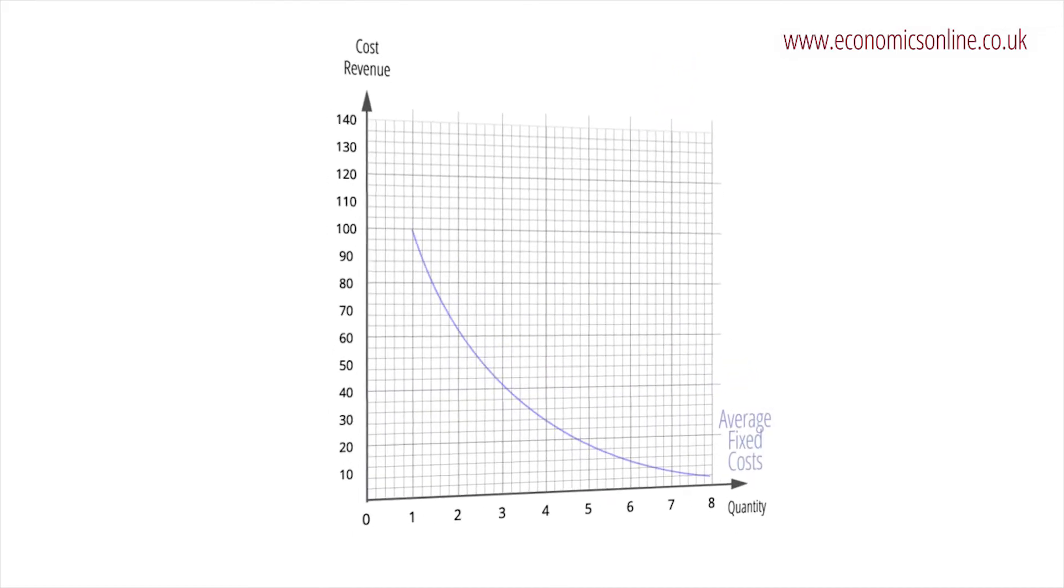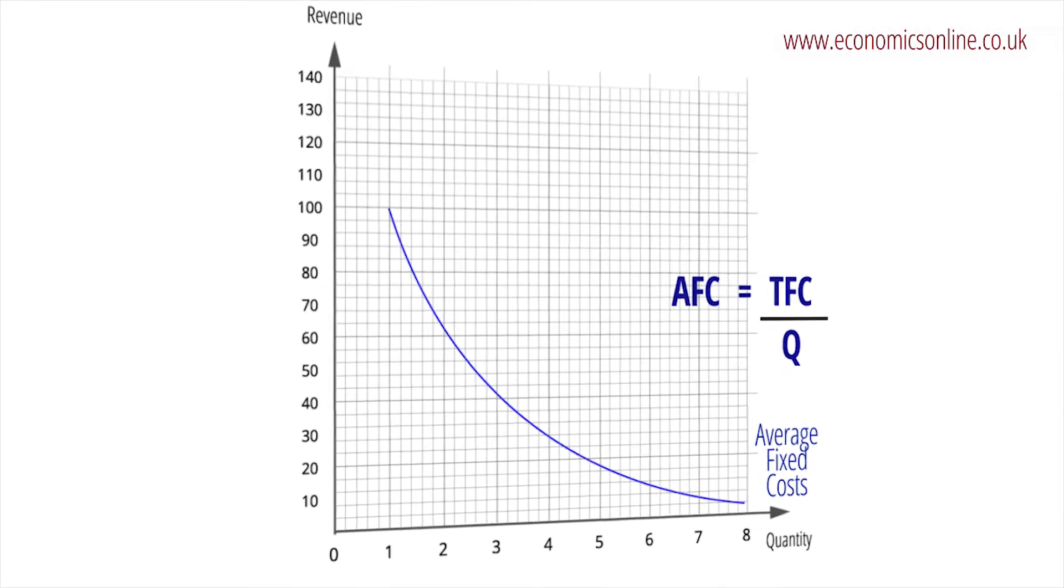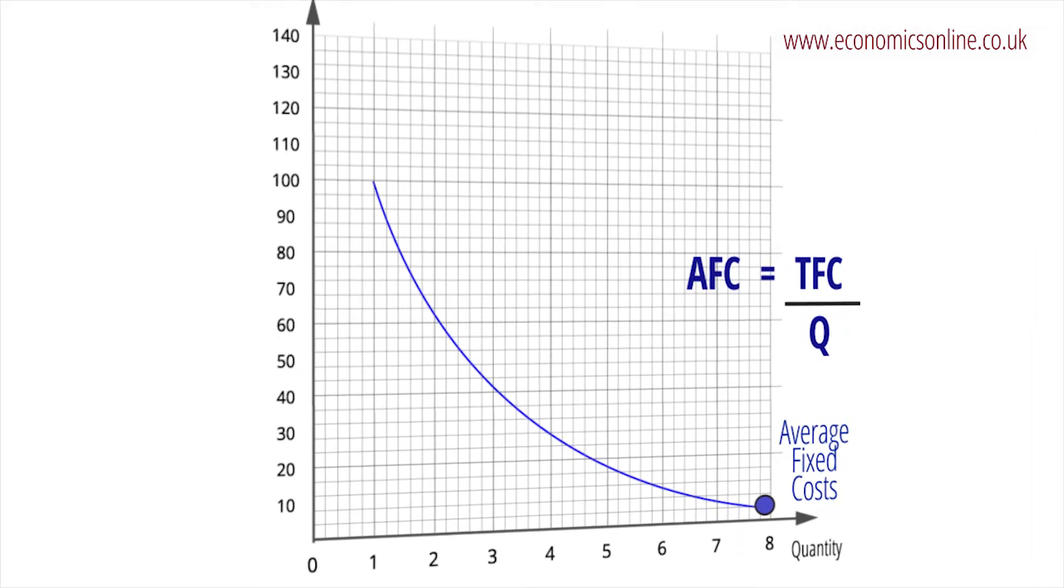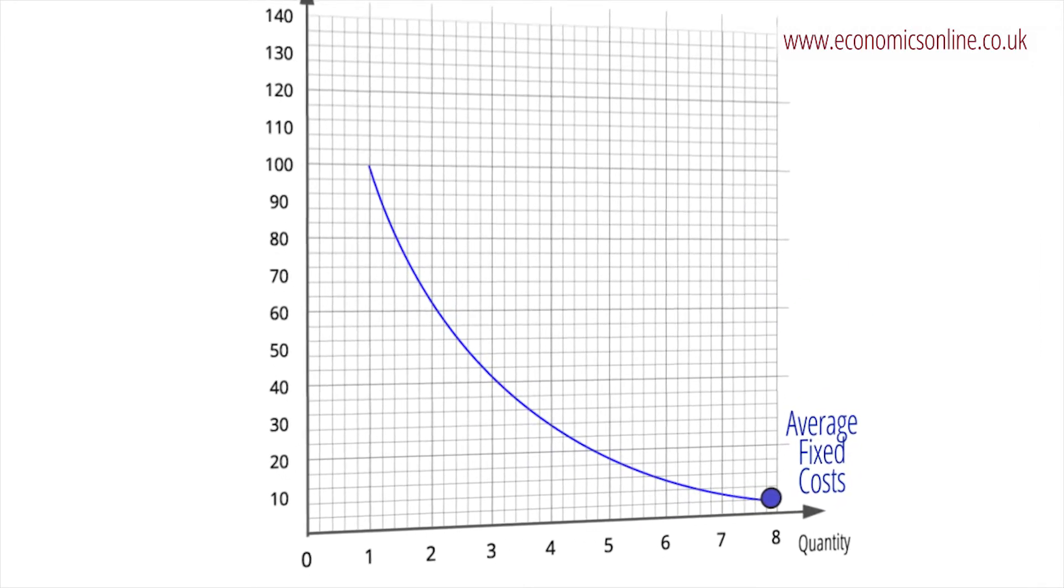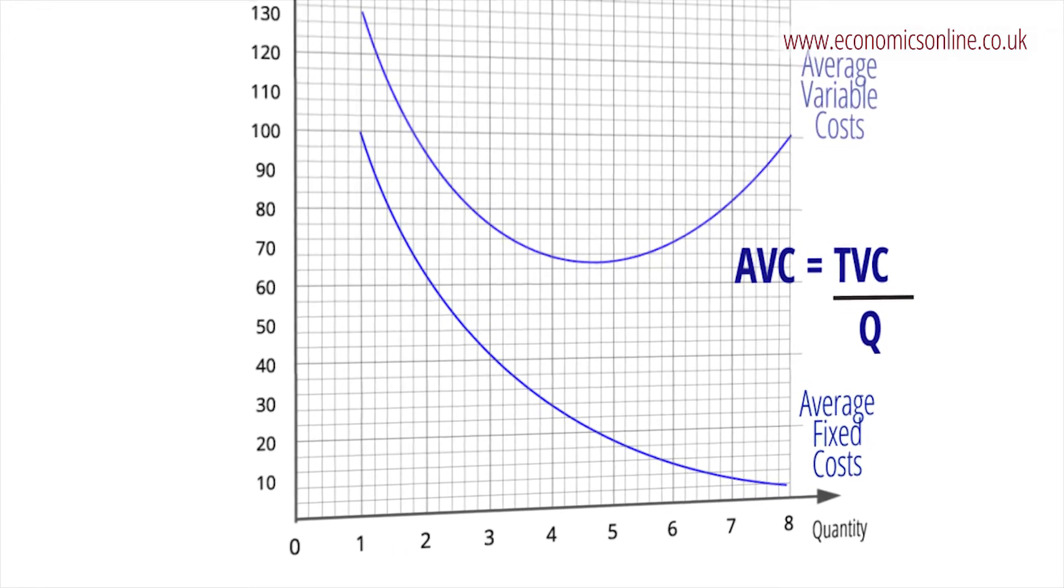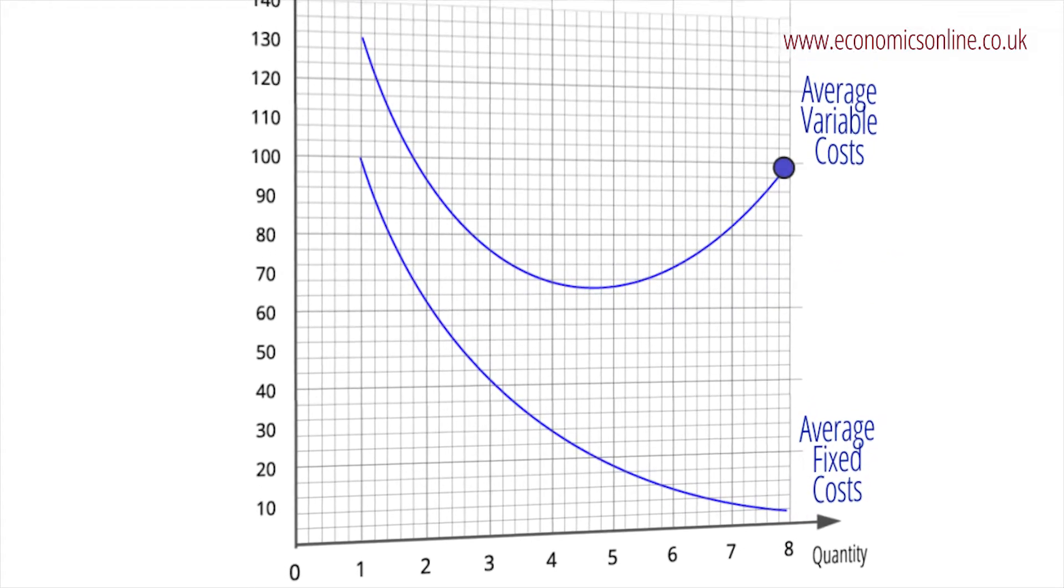Average fixed costs, which are found by dividing total fixed costs by output, fall continuously with output. Average variable costs are found by dividing total variable costs by output. Its curve will at first slope down, reach a minimum point, and then rise, reflecting the onset of diminishing marginal returns.